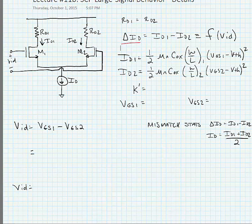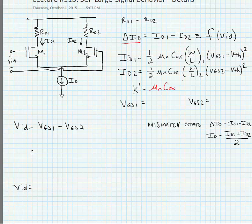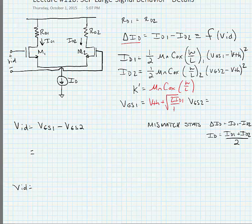We're going to define K prime as mu_n times C_ox times W over L. With this, we can write VGS1 and VGS2 in terms of K prime. We're assuming there are no geometry errors or doping errors in these transistors, so VTH is equal in both transistors.